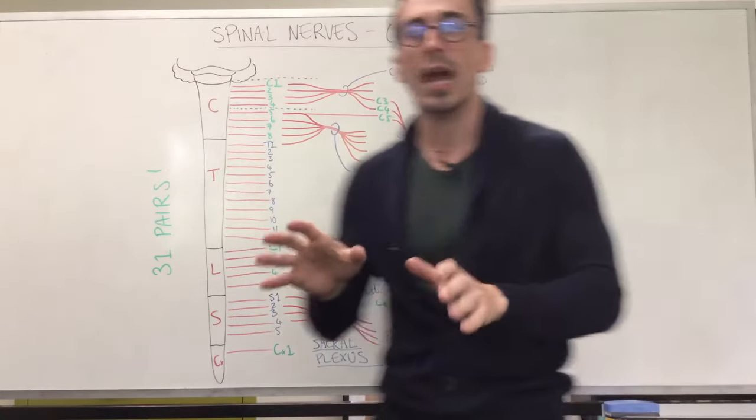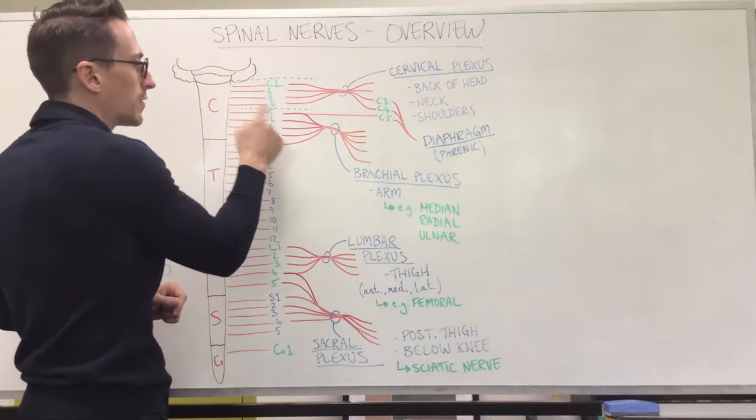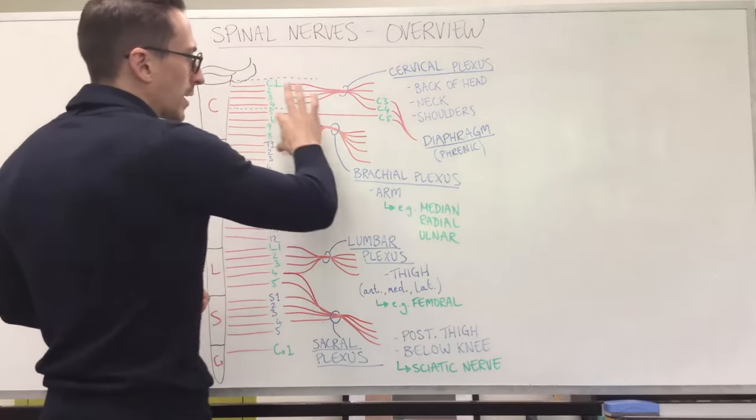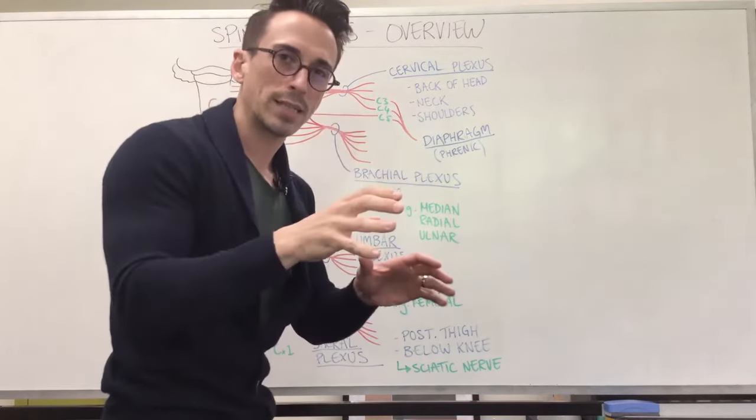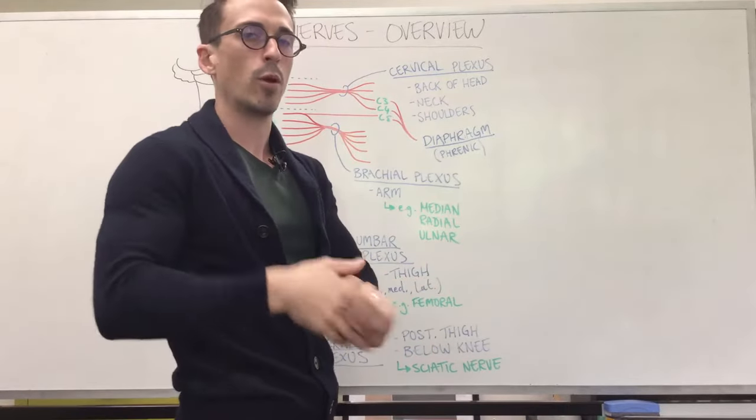If we move down and have a look at C5 to T1, so cervical nerve 5, 6, 7, 8 and thoracic nerve 1 come together to form the brachial plexus. And the brachial plexus innervates the arm. Now there's a bunch of nerves associated here, but I want you to remember three.